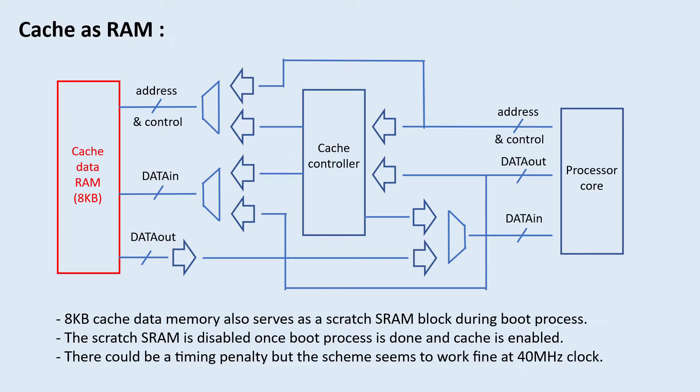I'm doing this partly because I'm running low on on-chip memory, so I can save some memory resource this way. Supposedly this data memory access will be slower as I have more logic in all its control and data path. But in the actual run it works fine, still with 40 MHz processor clock, so I just keep it this way for now.